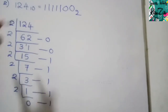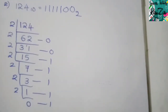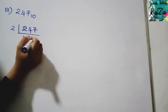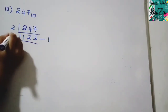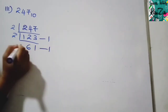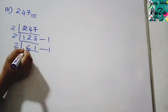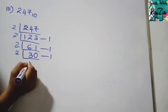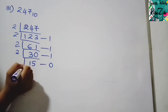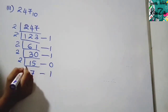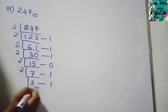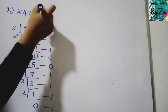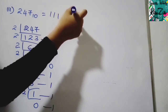Let's do one more: 247 to the base 10. Dividing: 247 ÷ 2 = 123 remainder 1. 123 ÷ 2 = 61 remainder 1. 61 ÷ 2 = 30 remainder 1. 30 ÷ 2 = 15, no remainder. 15 ÷ 2 = 7 remainder 1. 7 ÷ 2 = 3 remainder 1. 3 ÷ 2 = 1 remainder 1. 1 ÷ 2 = 0 remainder 1. So the binary conversion is 11110111 to the base 2.